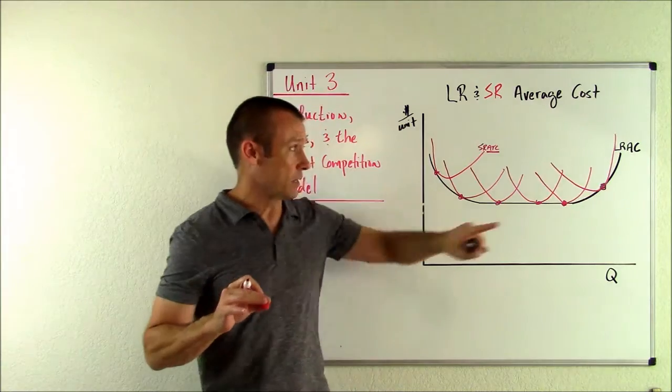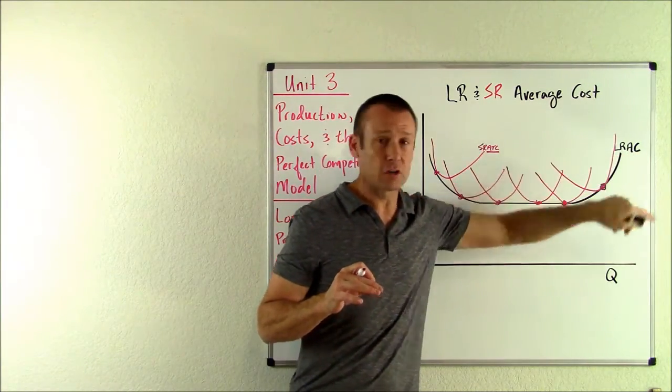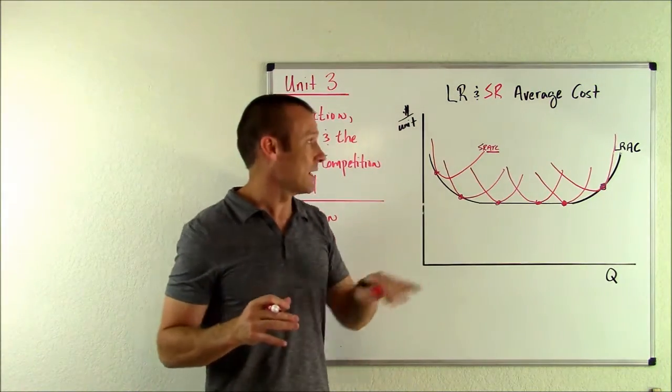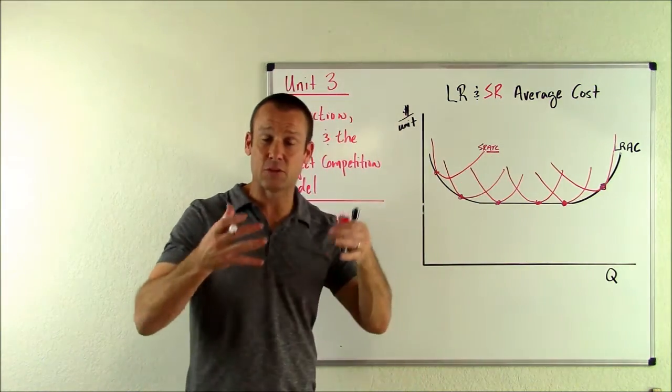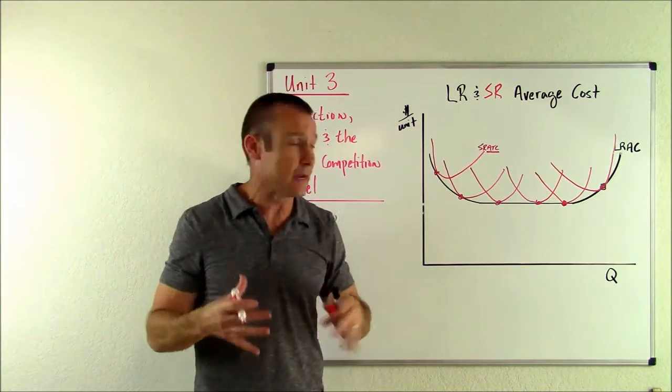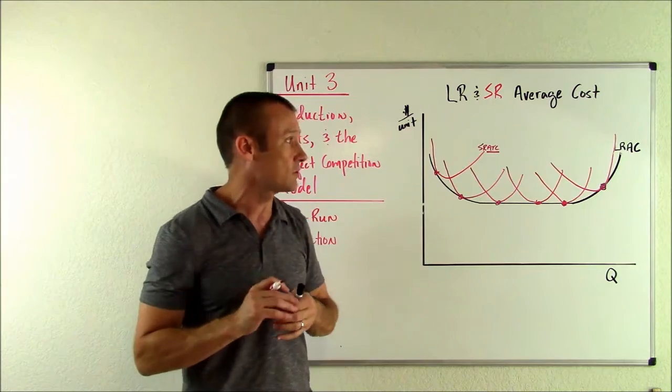Now, key also point. When you do the long run average cost curve, you don't need to say long run average total cost. Why is that? Well, guys, the reason we need total cost is we have fixed cost and you have variable cost. So you need to communicate, hey, we're adding all of that in when we have our average total cost curve.